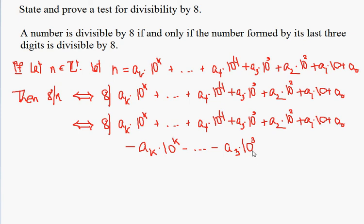2 to the third goes into 10 to the third, and so therefore 8 divides a thousand and therefore 8 will divide any higher power of 10 as well. If 8 divides a thousand then 8 divides 10,000, 100,000 and so on. And we have a theorem that says that 8 divides a number if and only if 8 divides the number minus or plus a multiple of 8.